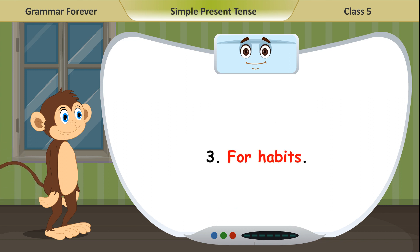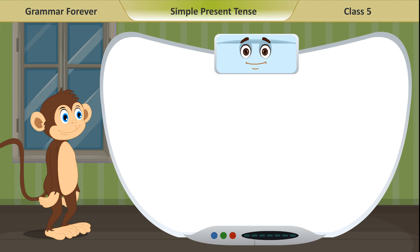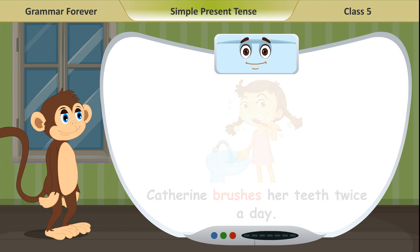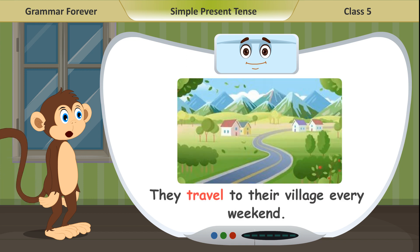We use the Simple Present Tense for habits. Examples: I get up early every day. Catherine brushes her teeth twice a day. They travel to their village every weekend.